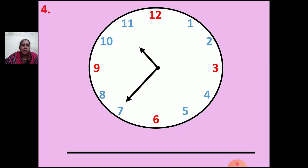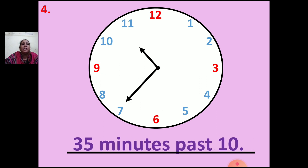Now the fourth question. You can see hour hand and minute hand and numbers on the clock. The hour hand is between 10 and 11, and the minute hand is pointing to 7. You have to see the table of 5: 5 sevens are 35. So the answer is 35 minutes past 10.